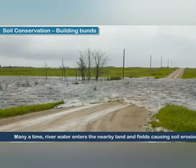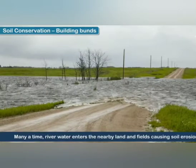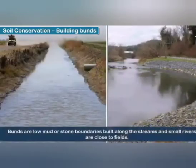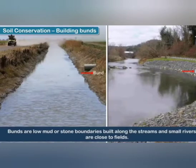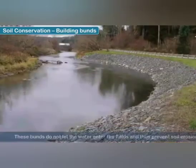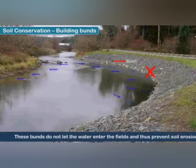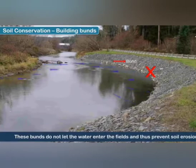Next, the soil conservation method of building bunds. Many times, river water enters the nearby land and fields, causing soil erosion. Bunds are low mud or stone boundaries built along the streams and small rivers close to fields. These bunds do not let the water enter the fields and thus prevent soil erosion.